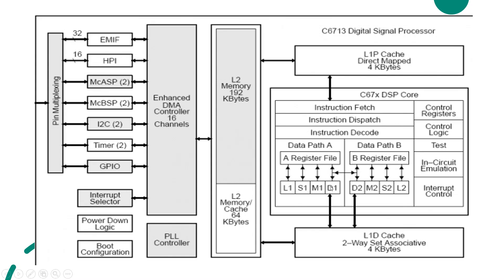We call D1 for data transfer and D2 for data transfer on the B side. M1 is for multiplication. L2 and S2 handle logical and arithmetic operations and bit manipulation operations. We take 32-bit instructions.